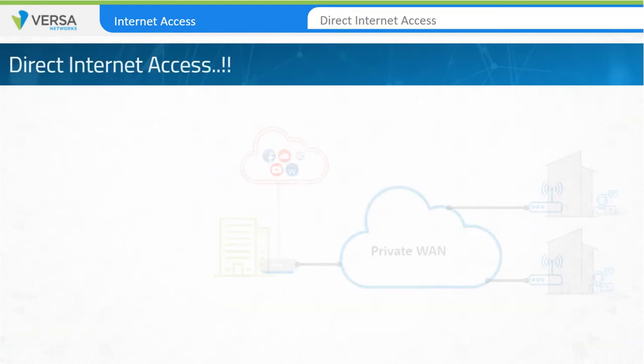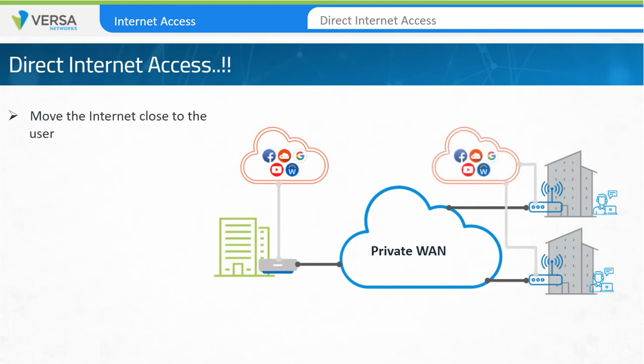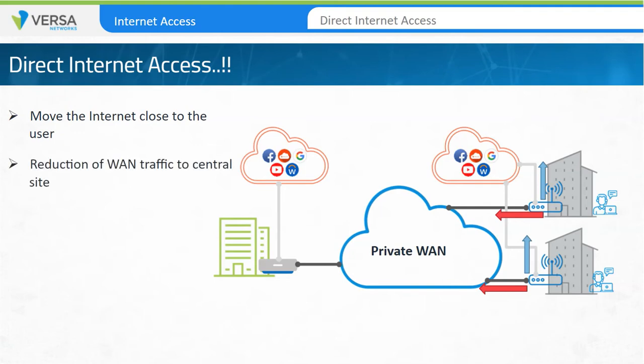The first benefit provided by DIA is to move the internet close to the user base. With DIA, each site has WAN connectivity for internal resource access and direct internet connectivity for internet-based applications and resources. One of the benefits of the DIA model is the reduction of WAN traffic to the centralized site. This allows the use of lower bandwidth circuits between sites and headquarters and reduces the need to upgrade to faster, more expensive WAN links as applications move towards web-based services.